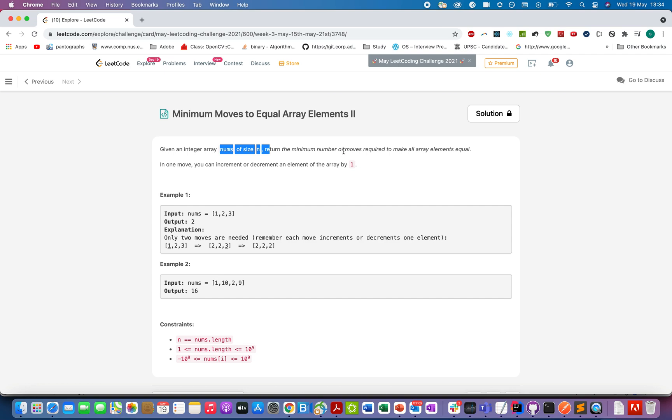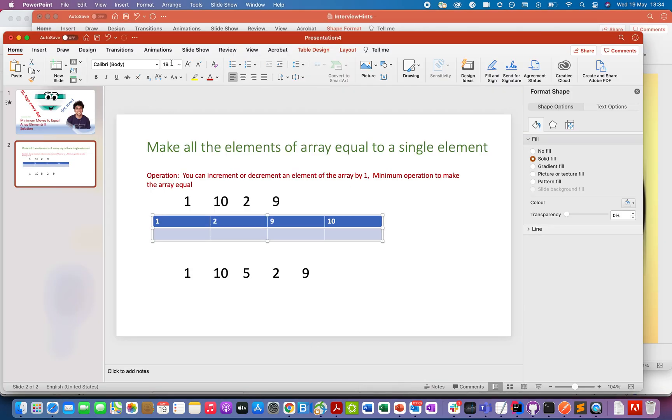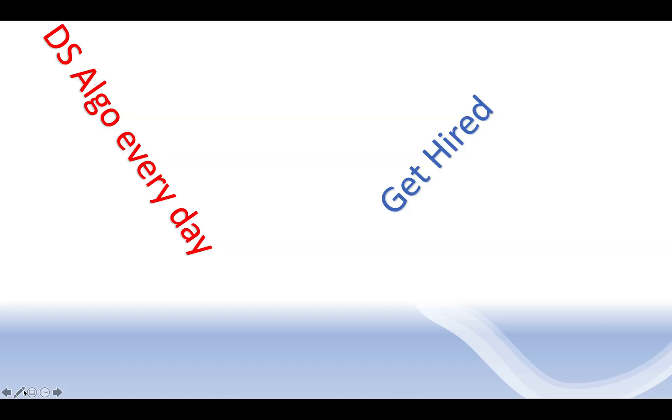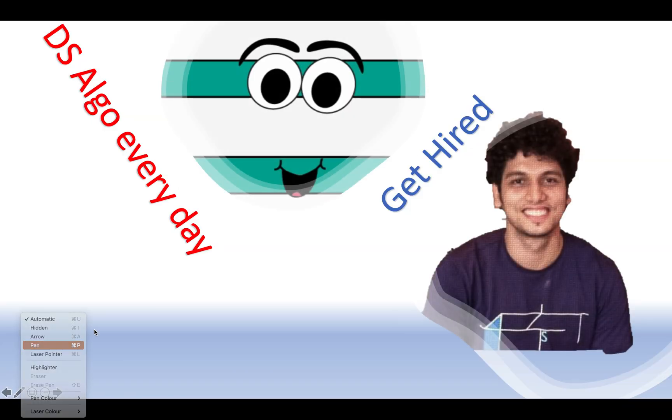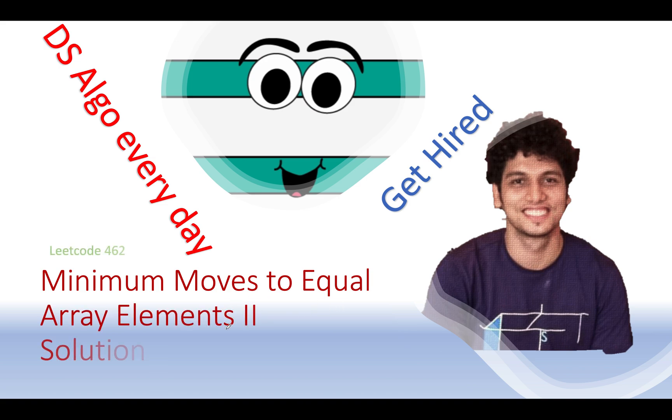How can you define one single move? In a single move you can increment or decrement a value of an integer by one. So let's try and understand the solution by the presentation that I have created for this. It's not a very hard problem, just one simple trick and you will get the answer. So let's get started and let me just start the slideshow.